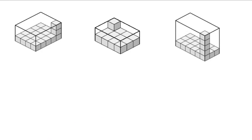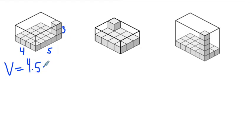Let's try another one. Checking the base: one, two, three, four going on one edge, and one, two, three, four, five going the other way. So the length is five, the width is four, and the height is one, two, three — three. The volume of this rectangular prism with missing cubes is four times five times three. Four times five is 20, and 20 times three is 60 cubic units.